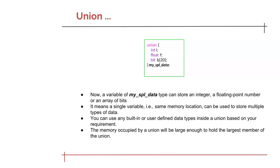A typical usage of union, especially in RTL design, is when you have a fixed-width bus carrying many different types of packets — for example, type 1 packets with different sub-fields, type 2 packets with another combination, and so on. The effective way to model this in RTL is to define different structures for each packet type, and then define a wrapper union containing all those structures. This lets you handle different bus packets with a single variable in RTL design.